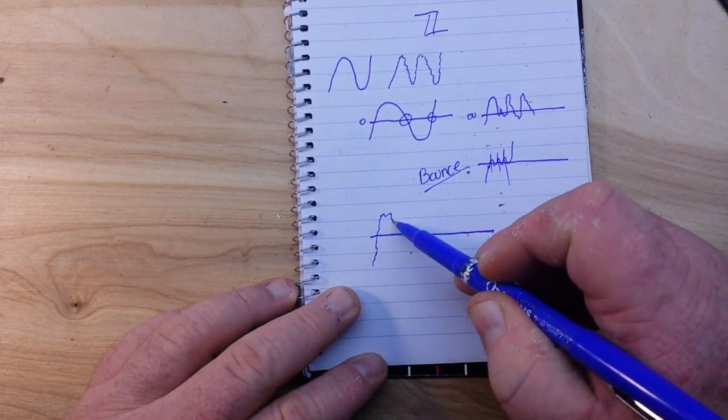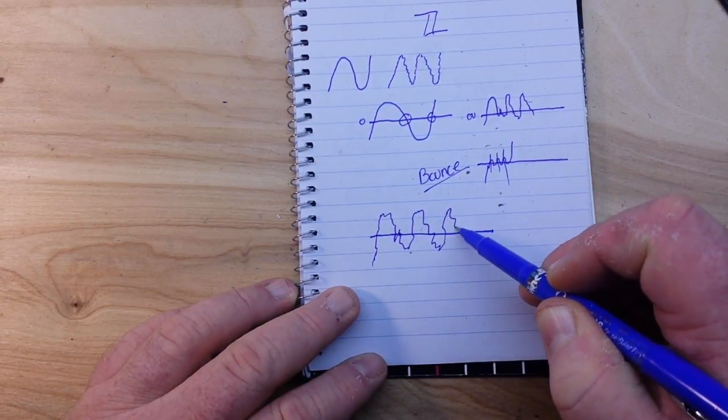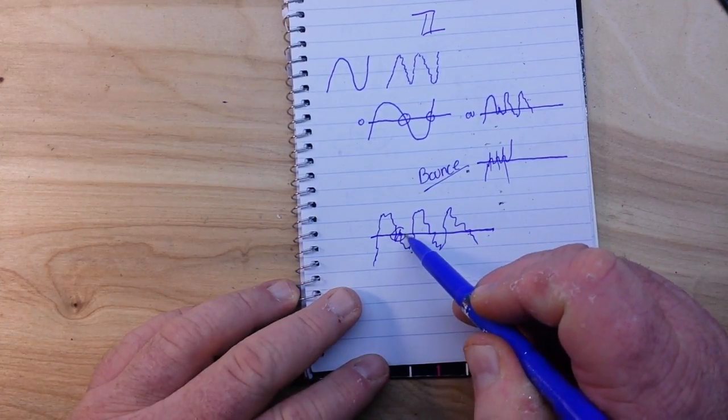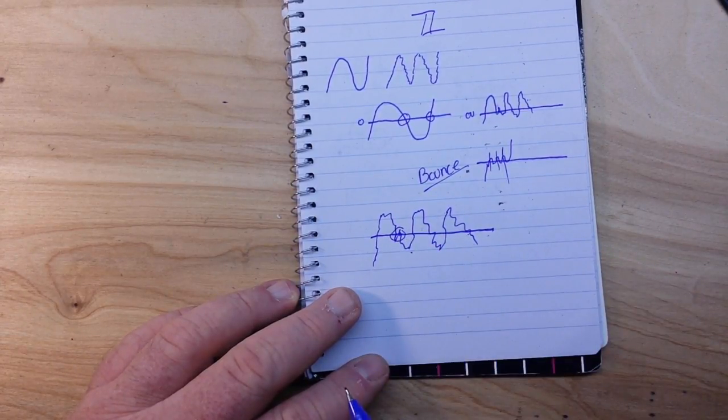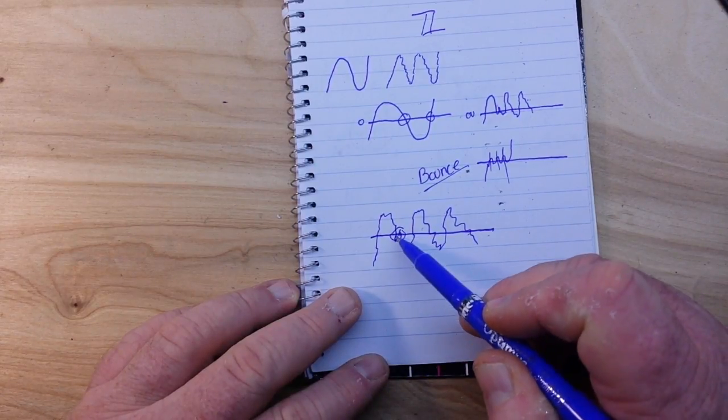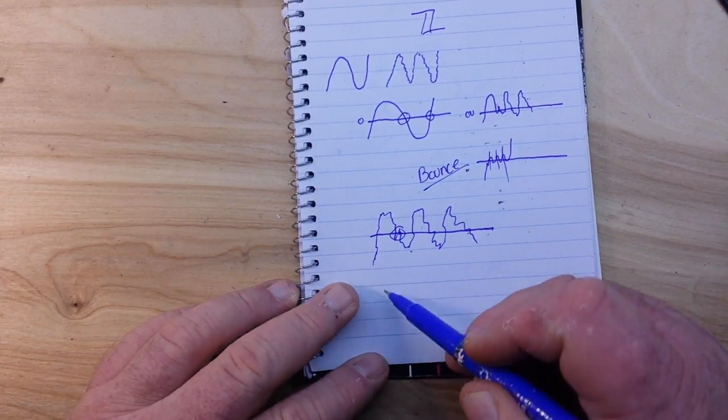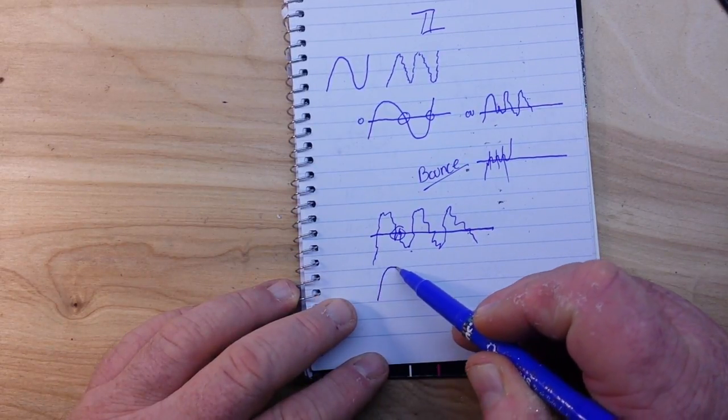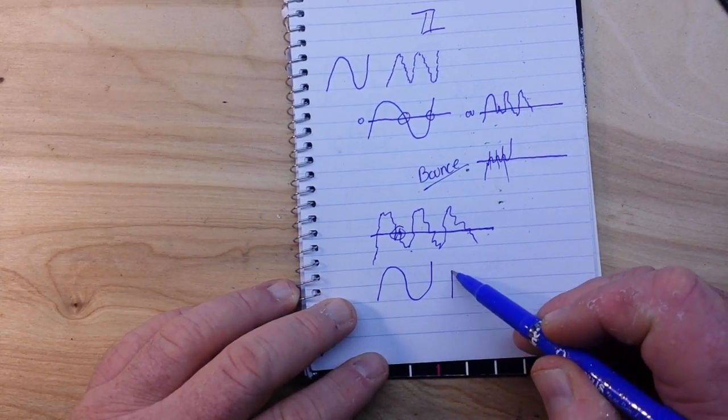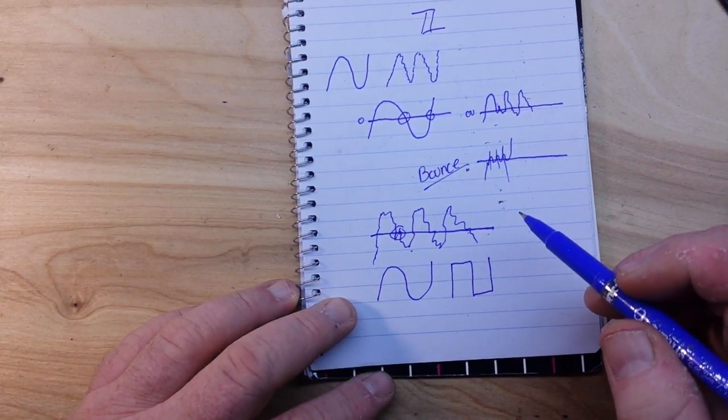So we'll have our dirty signal, again very exaggerated but you get the idea. And right here is where it crosses three or four times. What we need to have happen is we need it to cross one time, and basically the way to do that is to convert our dirty sine wave into a cleaner square wave.